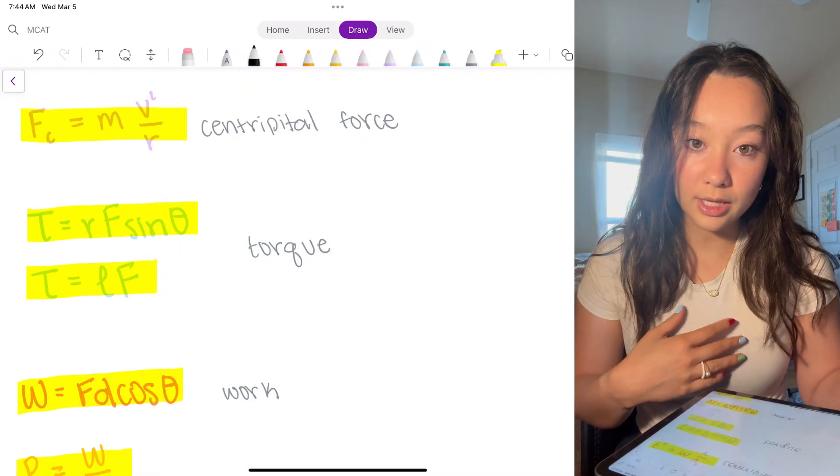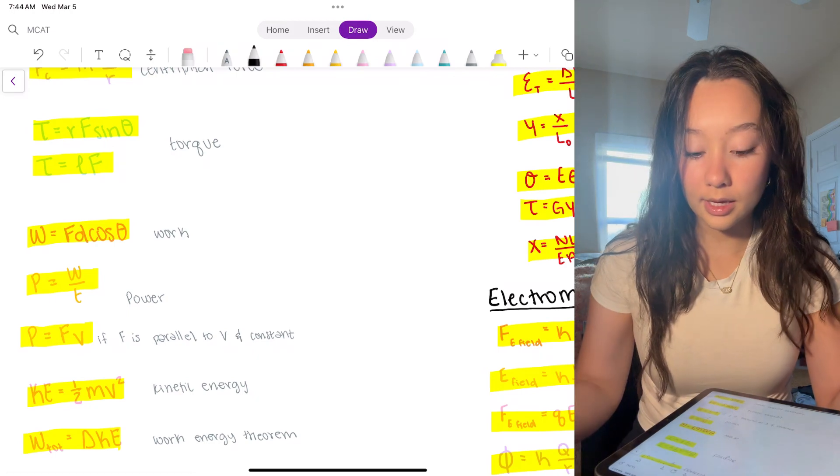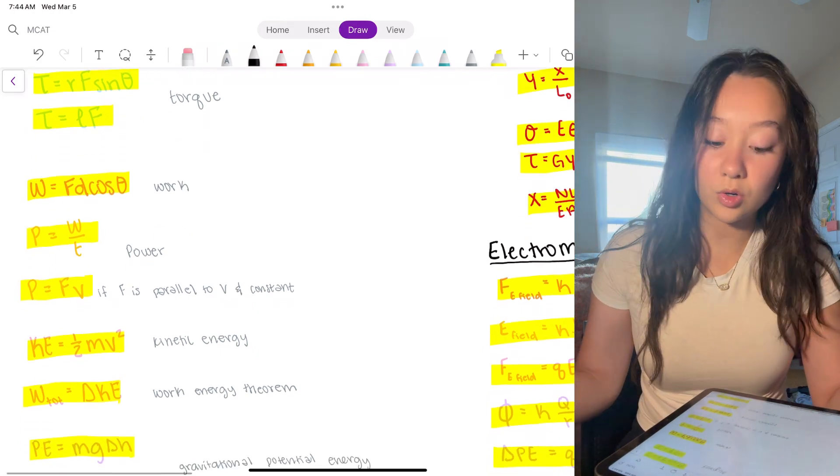Torque equals the length times the force times the angle at which it meets. Work fd cosine theta. Power work over time.